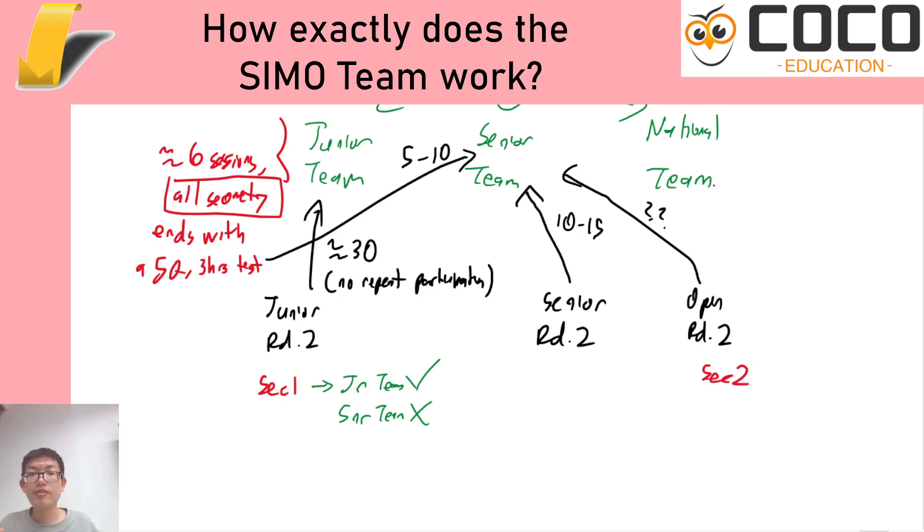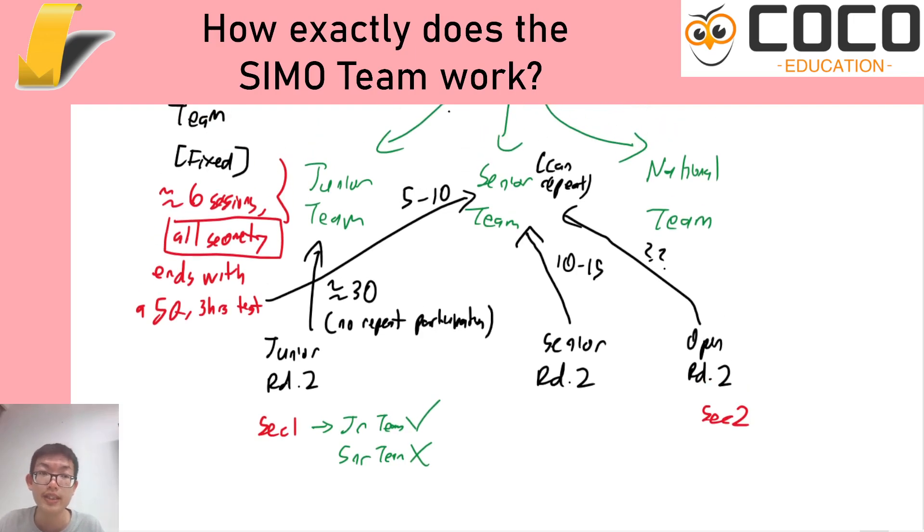Now all this is flexible because the senior team you can have repeat participants. So it is possible for someone to be in the senior team for more than one year. The junior team training is basically a fixed set of lessons—the test is going to change but the lessons are fixed. The senior team is sort of like semi-fixed, there's some things that change and some things that remain the same, and that's why a student could repeat being in the senior team.